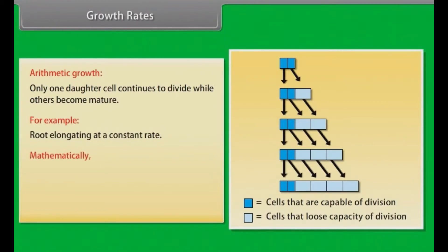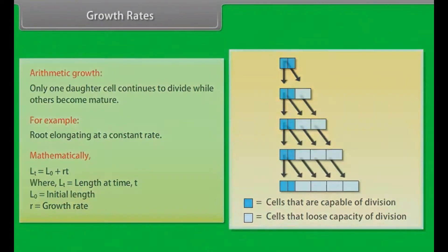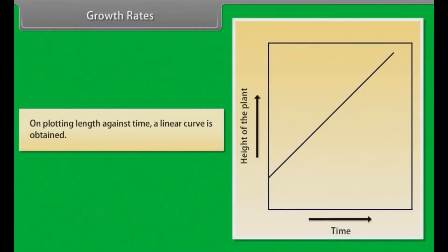Mathematically, Lt equals L0 plus RT, where Lt equals length at time T, L0 equals initial length, R equals growth rate. On plotting length against time, a linear curve is obtained.